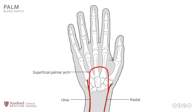Likewise, the deep branches from both the ulnar and radial arteries unite to form the deep palmar arch, in which it is primarily the radial artery that participates in its formation. Again, there is a fair amount of anatomical variation in how these arches are formed and whether they are complete or incomplete. Both of these arches are excellent examples of what we call anastomosis, where arteries come together, mix, and have a joint blood supply. The superficial and deep palmar arches both supply the rest of the hand by dividing into multiple smaller branches.